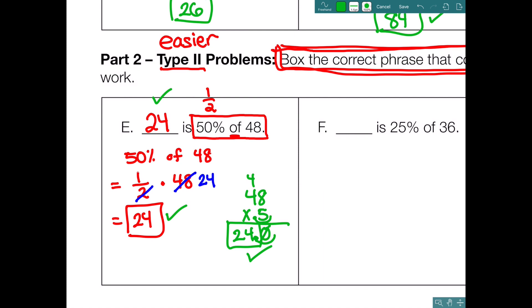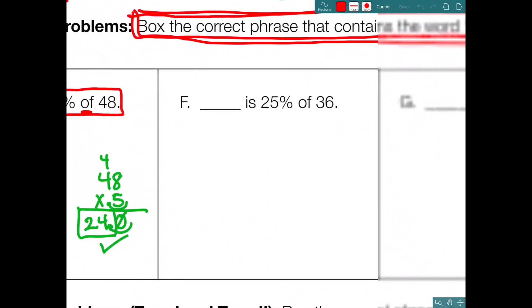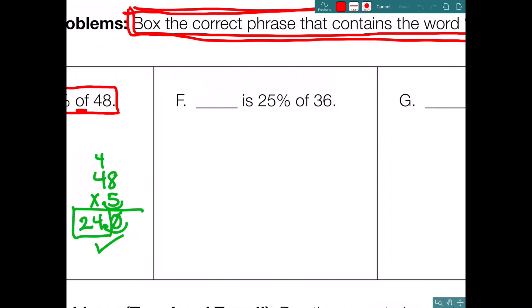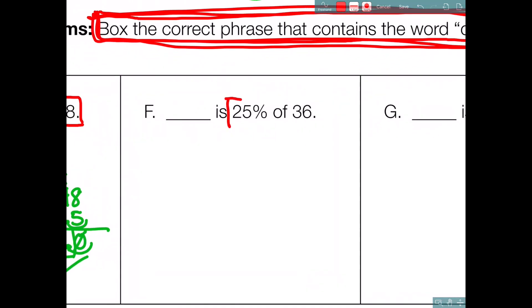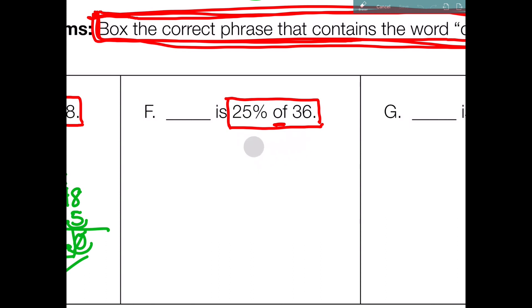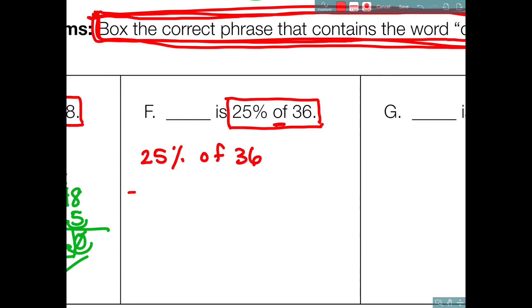Let's look at one more type 2 example — box F: 'blank is 25% of 36.' Box the correct phrase that contains 'of' — put a box around '25% of 36' and make sure 'of' is in the middle. You know 'of' means multiply, and type 2 problems are easier because you can already see the two numbers to multiply: 25% and 36. Write down '25% of 36.'